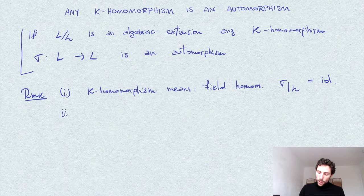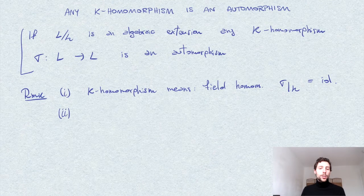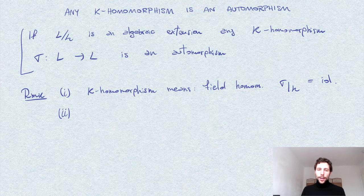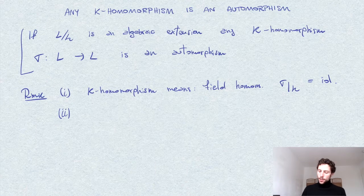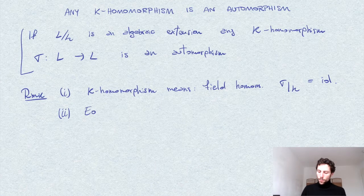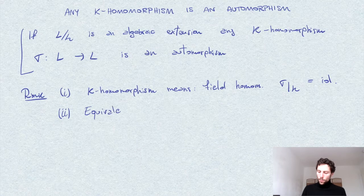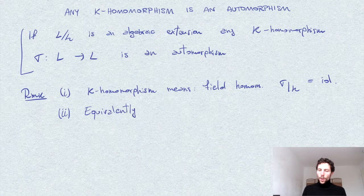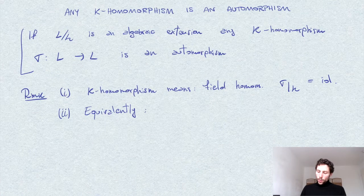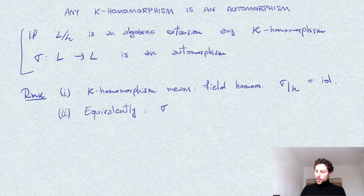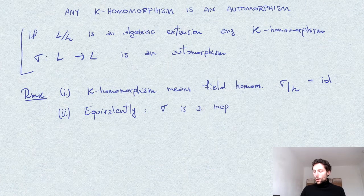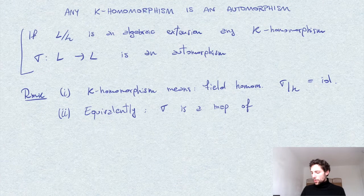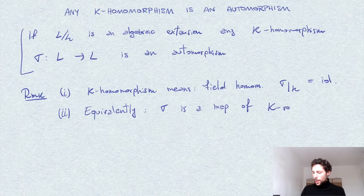In other words, if you think about L as a vector space over the field k, this precisely the condition that says that sigma is a morphism of vector spaces. So equivalent way to say this is that sigma is a map of k vector spaces.